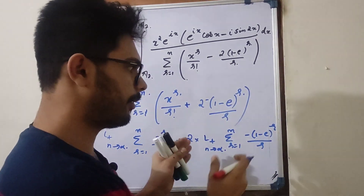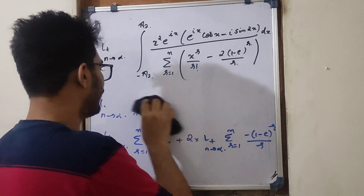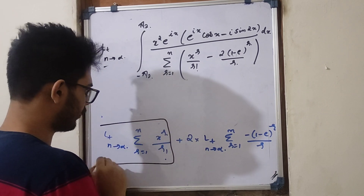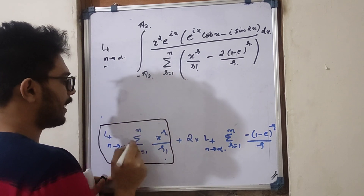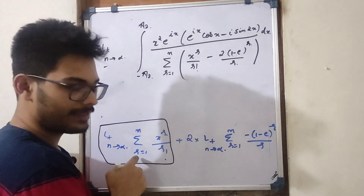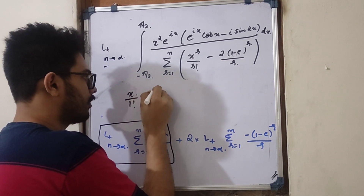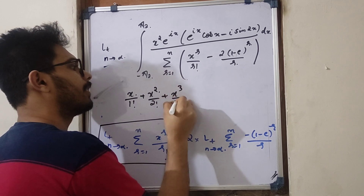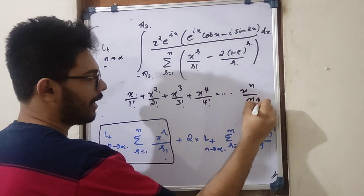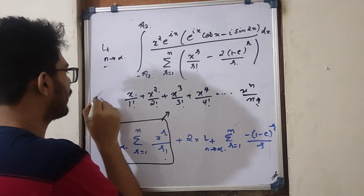We will put this limit on the two parts. We will work through both parts. If n tends to infinity, the value is infinite — this is a summation. I will add values from 1 to n: x raised to 1 divided by 1 factorial, x raised to 2 divided by 2 factorial, x raised to 3 divided by 3 factorial, x raised to 4 divided by 4 factorial, up to x raised to n divided by n factorial. So this is the limit, and we have evaluated this.